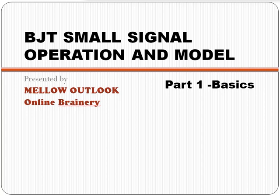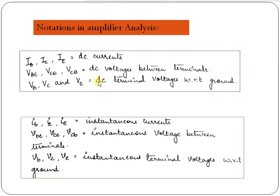BJT Small Signal Operation and Model, presented by Mellow Outlook. To analyze the AC operation of a transistor amplifier, it is necessary to develop an AC equivalent circuit for the transistor. The AC equivalent circuit is called the model of the transistor and simulates the behavior of the transistor when an AC signal is present. To keep the DC and AC quantities distinct, we represent DC quantities by uppercase letters and subscripts, whereas instantaneous values of AC quantities are represented by lowercase letters and subscripts.